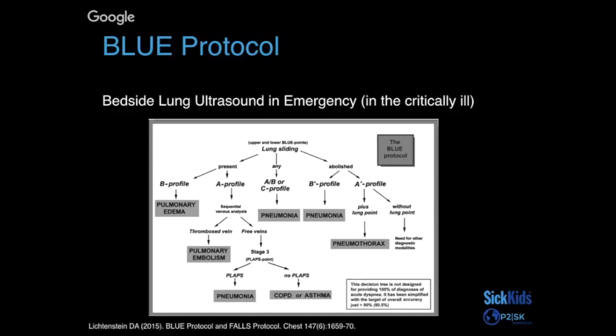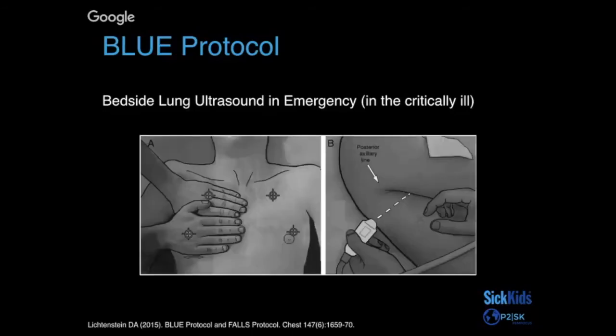Regarding the profiles: A/B is a mix where you get some areas with A lines and then some areas with focal B lines. When you have other findings, it's more typical of pneumonia, versus if it's strictly a diffuse B profile, it's more pulmonary edema. The technique is the same, but the zones are a bit different because these tend to be supine patients who are sometimes intubated or in a lot of distress. They look at six zones including the posterior axillary line instead of the back since patients can't always be sat up.